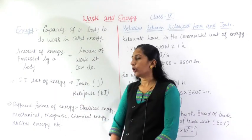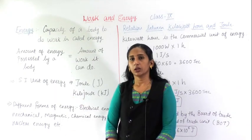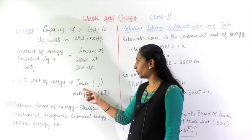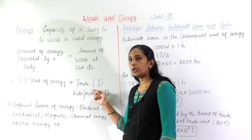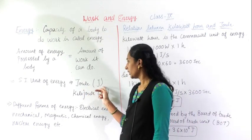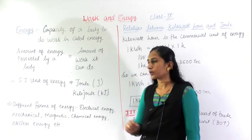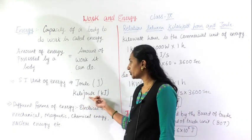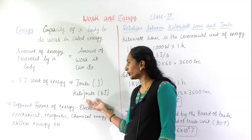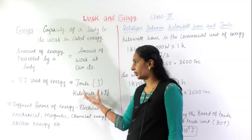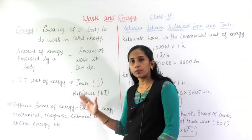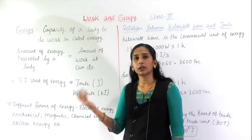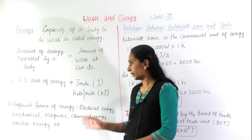Now, what is the SI unit of energy? The unit of energy is the joule, represented as J. Kilojoule is a bigger unit of energy — joule is the normal unit and kilojoule is the larger unit of energy.